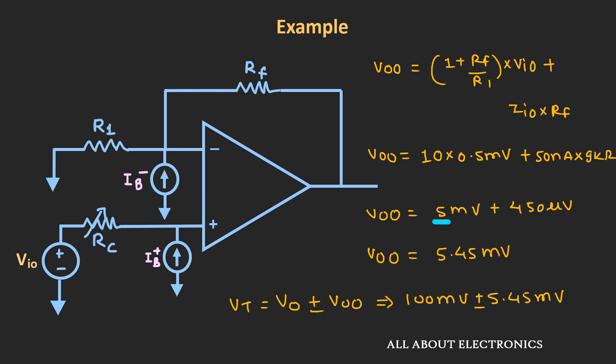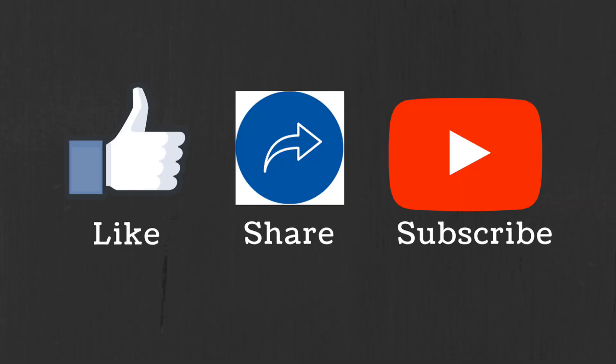The major contributing factor in this error is the input offset voltage. As we saw in the last video, the error introduced by the input offset voltage can be minimized by using DC nulling circuits, while the error introduced by the input bias currents can be minimized by using the compensation resistor. I hope in this video you understood what is input offset current and what is input bias current, and how this bias current affects the output of the op-amp and how we can reduce its effect. If you have any questions or suggestions, let me know in the comment section below. If you liked this video, hit the like button and subscribe to the channel for more such videos.